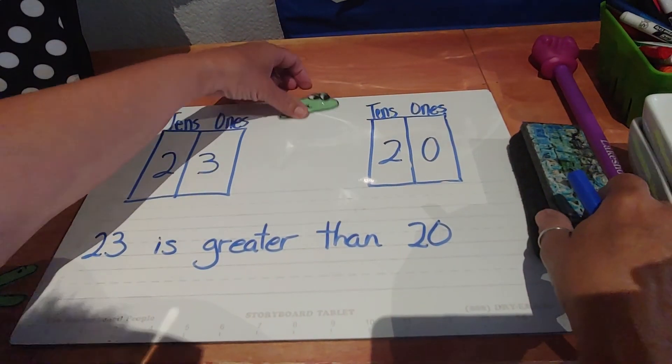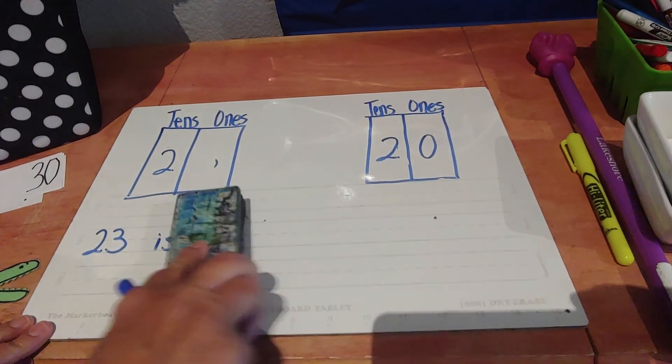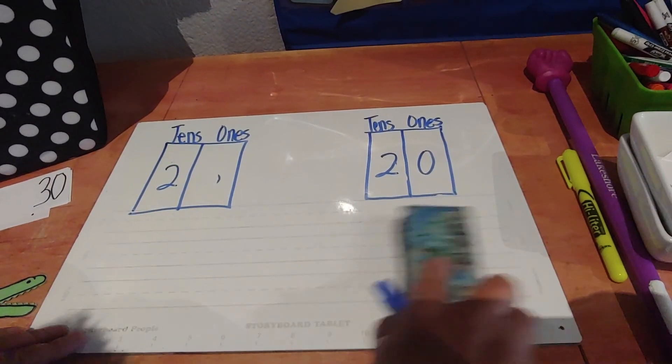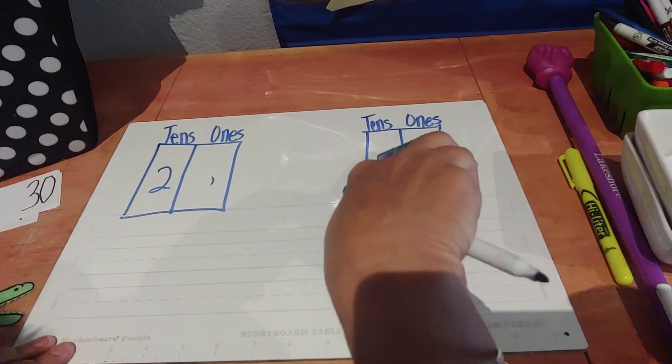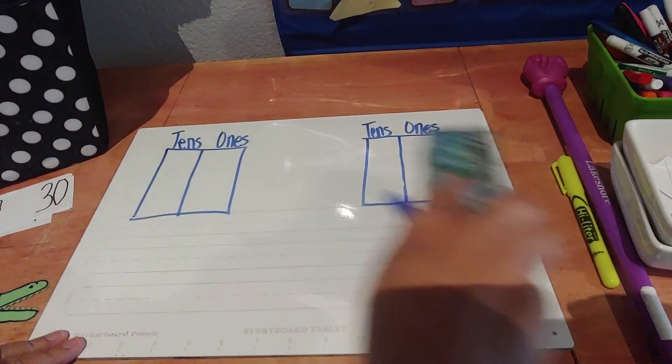So we'll do one more on that homework page. It's kind of a tricky one compared to the others. You know, they always try to do something tricky to you. So we're going to erase these out. And this one.